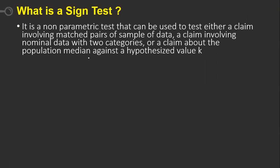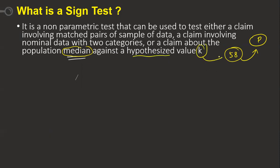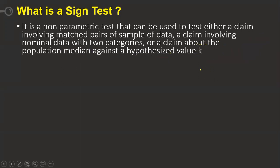Otherwise, a claim about the population median. It does not mean it should only be the median. For example, suppose a population is there and I want to check whether the population median is 58 or not. Then we call it a claim about the population median against a hypothesized value — in this case, 58. In this situation only, we are going to use the sign test. It is for non-parametric data.